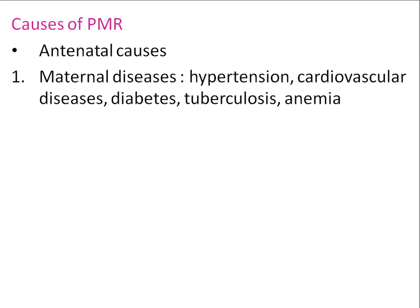The causes of perinatal mortality are divided into antenatal, intranatal, and postnatal causes. Antenatal causes are very important. Key antenatal causes include hypertension — if diagnosed early and treated with antihypertensives, infant mortality can be prevented — and cardiovascular disease, where pregnancy should be avoided in affected mothers.